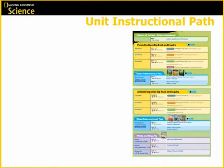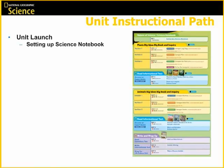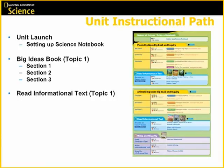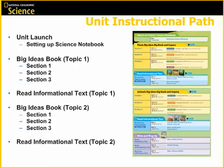Each unit in NG Science always follows the same instructional path for kindergarten. You will always begin with the unit launch and setting up the science notebook. Then you move on to the big ideas instruction for the first topic. Each topic is broken down into multiple sections. Once you complete all sections for topic 1, students read the informational text for topic 1. The cycle then repeats itself for topic 2. The unit ends with the write and wrap up instruction, which covers the content of both topics combined.